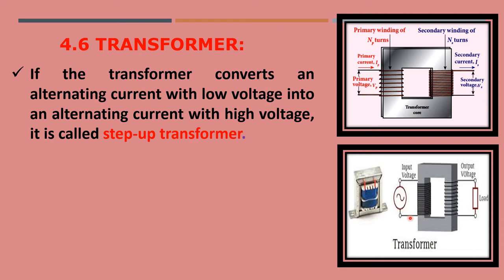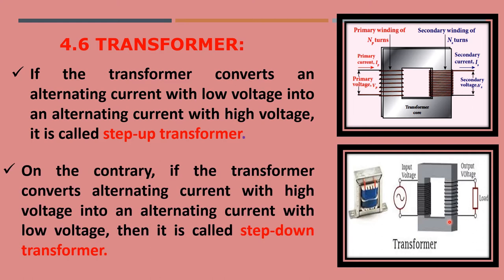The number of turns is higher in the primary circuit than in the secondary circuit, so higher voltage is stepped down to lower voltage because the number of turns in the secondary coil is lesser than that of the primary coil. If the transformer converts alternating current with higher voltage into alternating current with lower voltage, then it is called a step-down transformer.